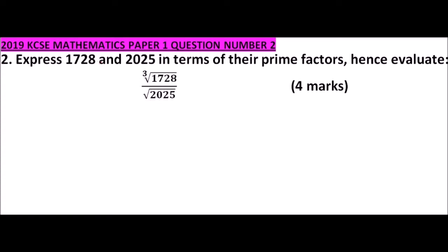Before we start, let's understand the key to passing mathematics: understanding what the question needs. The first part requires prime factors, and the second part requires us to evaluate. The word 'hence' means that when we find the cube root of 1728 and the square root of 2025, we must use the factors already worked out — not a calculator or any other method.